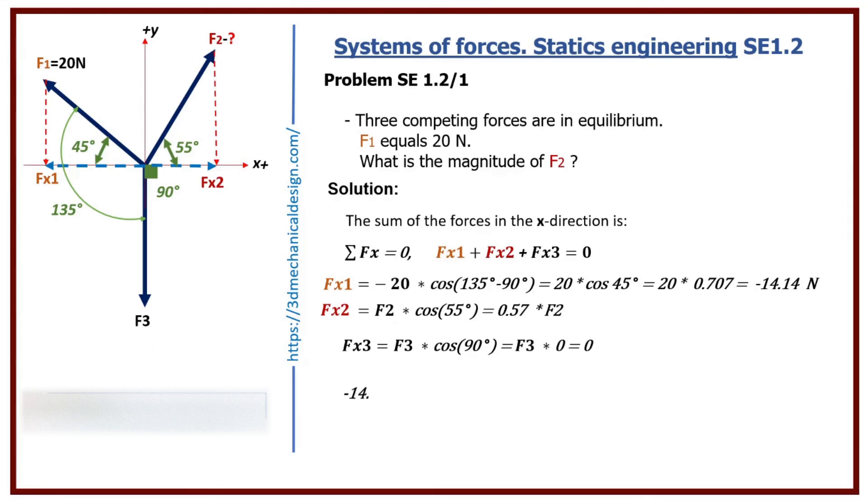Minus 14.14 plus 0.57 times F2 equals 0. F2 equals 14.14 divided by 0.57. Fx2 equals 24.8 newtons.